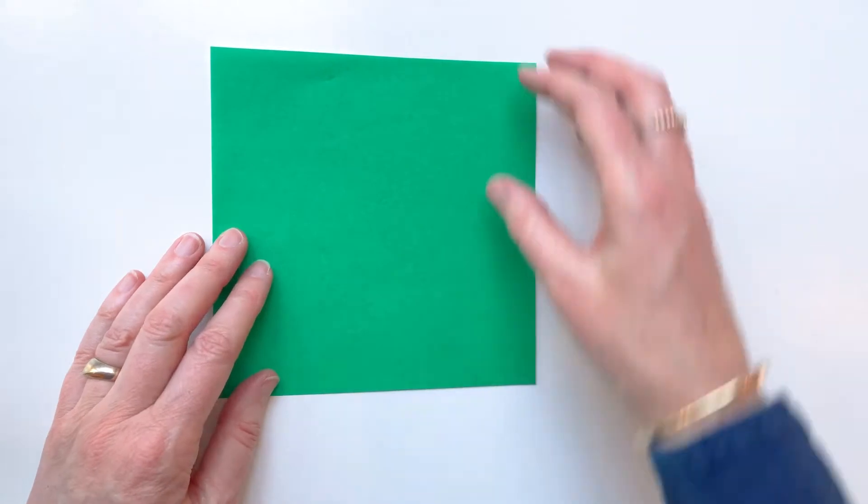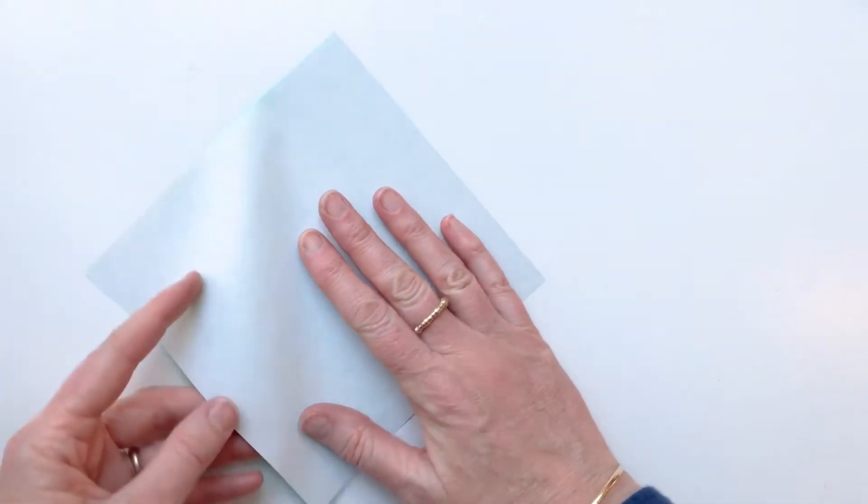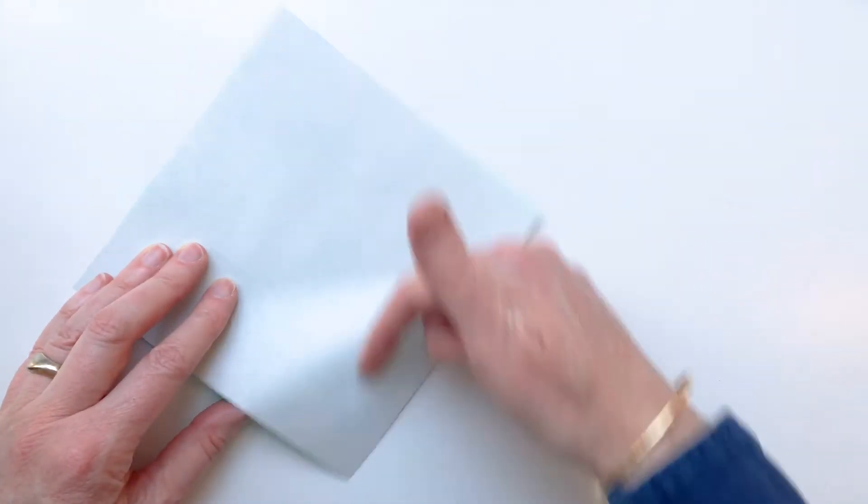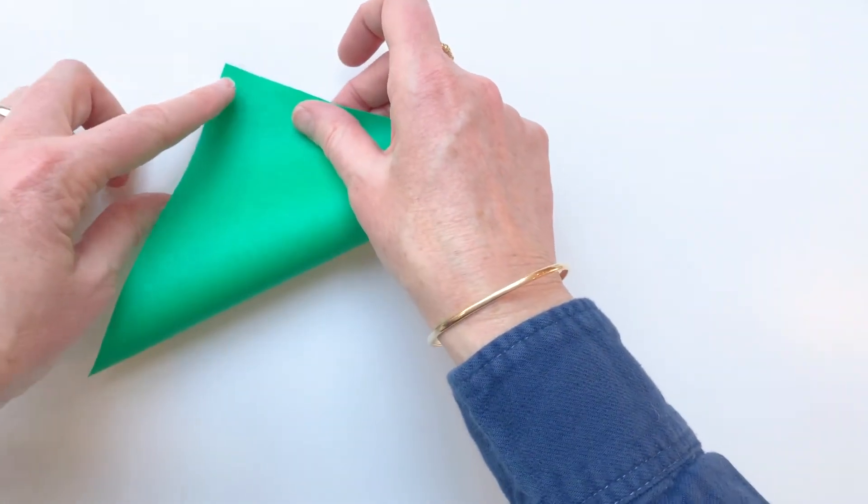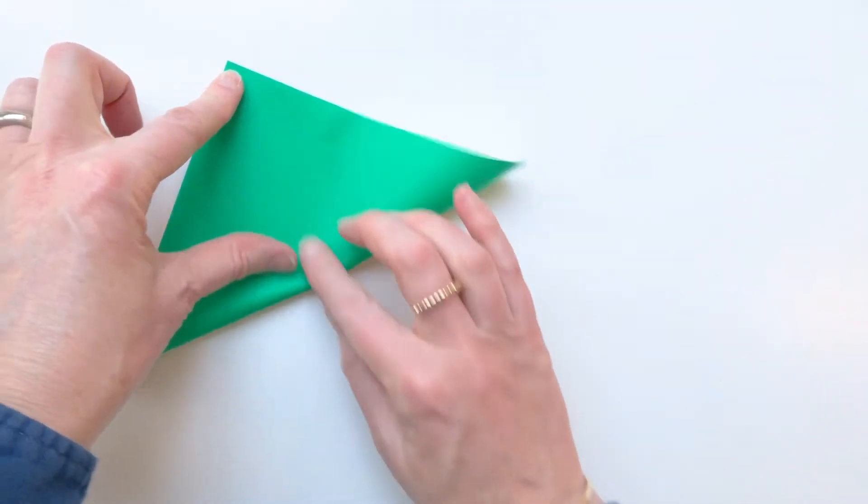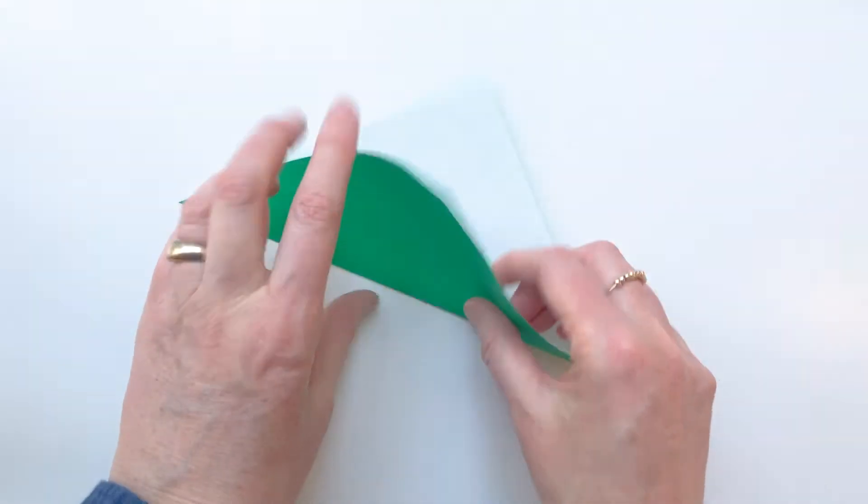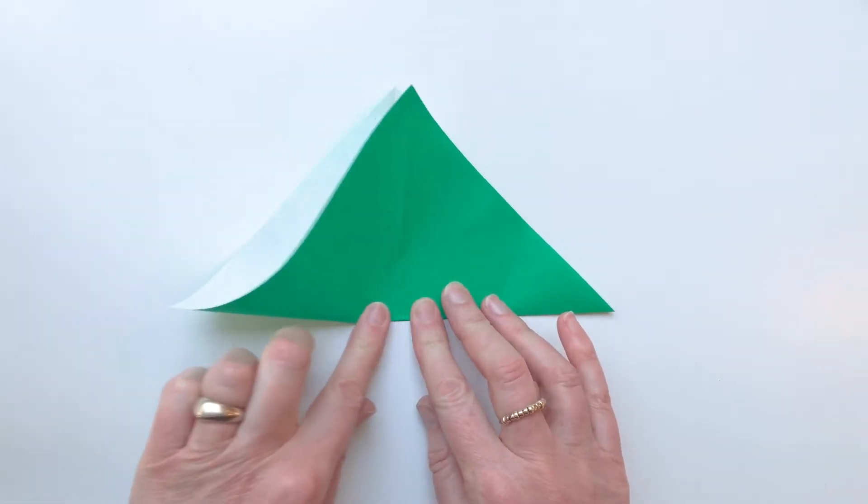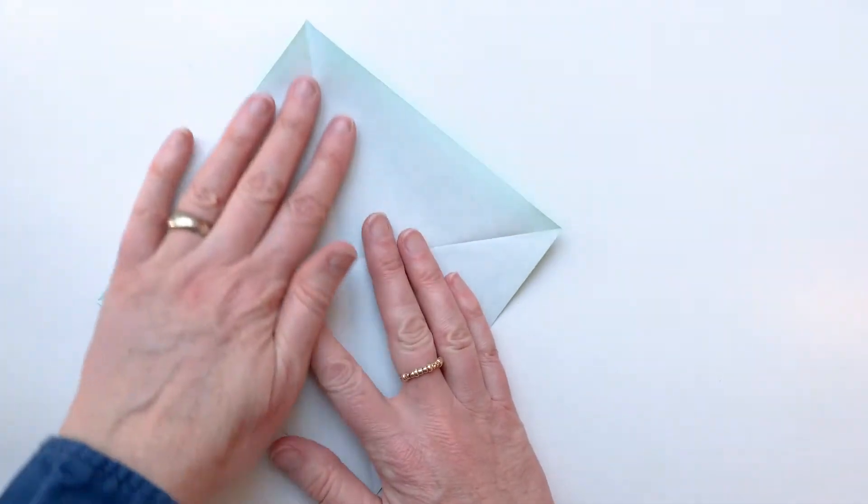So I've got one piece of square origami paper and I'm going to have the white side up. And I'm going to fold across the paper diagonally in both directions like this. There we are. And then you open it up again.